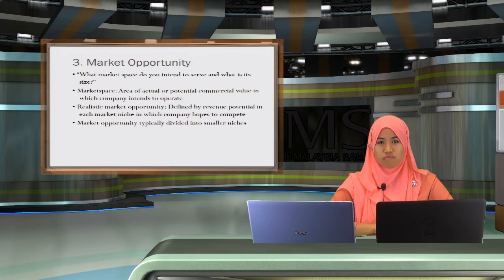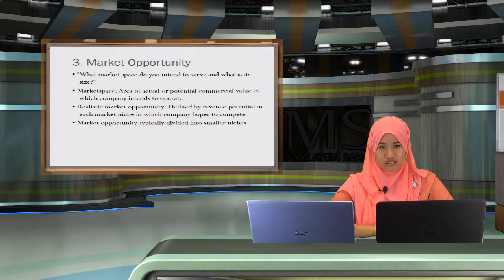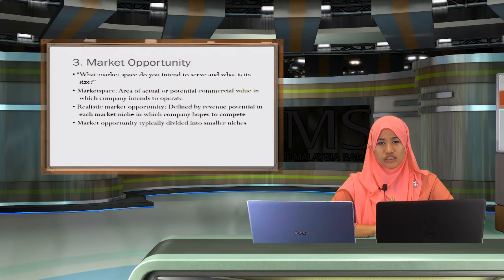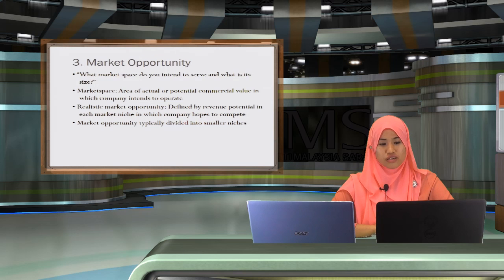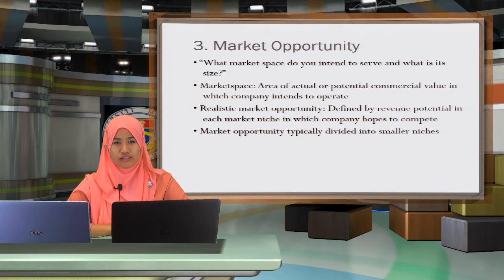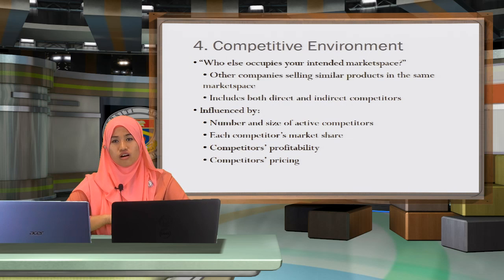The third element is market opportunity — what market space do you intend to serve, and what is its size? Market space is the area of actual or potential commercial value in which a company intends to operate. There are realistic market opportunities defined by revenue potential in each market niche in which a company hopes to compete. The market opportunity is typically divided into smaller niches.